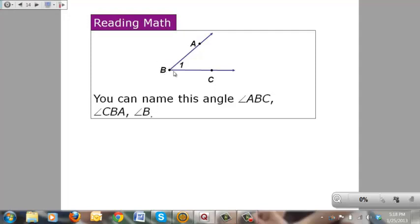based off of the vertex. You couldn't call it angle A, you could not call it angle C. You can name it using the three points, A, B, C, or C, B, A, or you could name it just by the vertex.